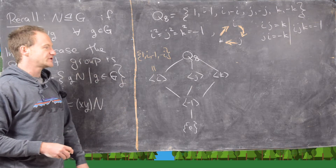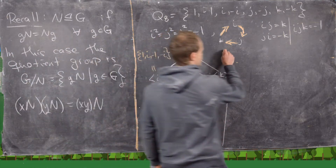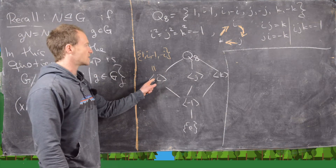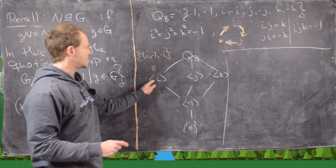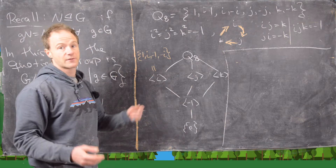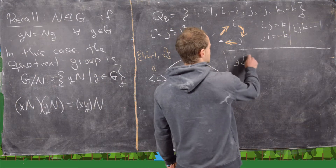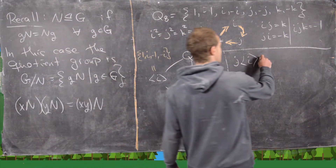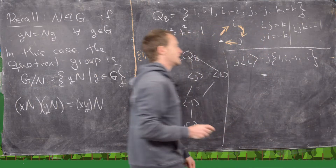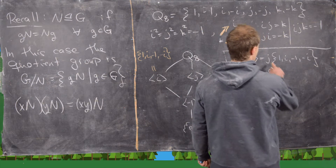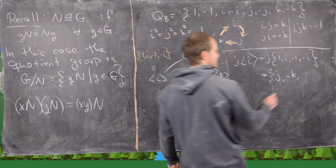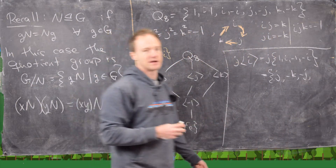We want to check which subgroups are normal and find the quotient groups. Let's check if ⟨i⟩ is normal by comparing left and right cosets. We only need to check elements outside ⟨i⟩, like j. The left coset j⟨i⟩ = {j·1, j·i, j·(-1), j·(-i)} = {j, -k, -j, k}.